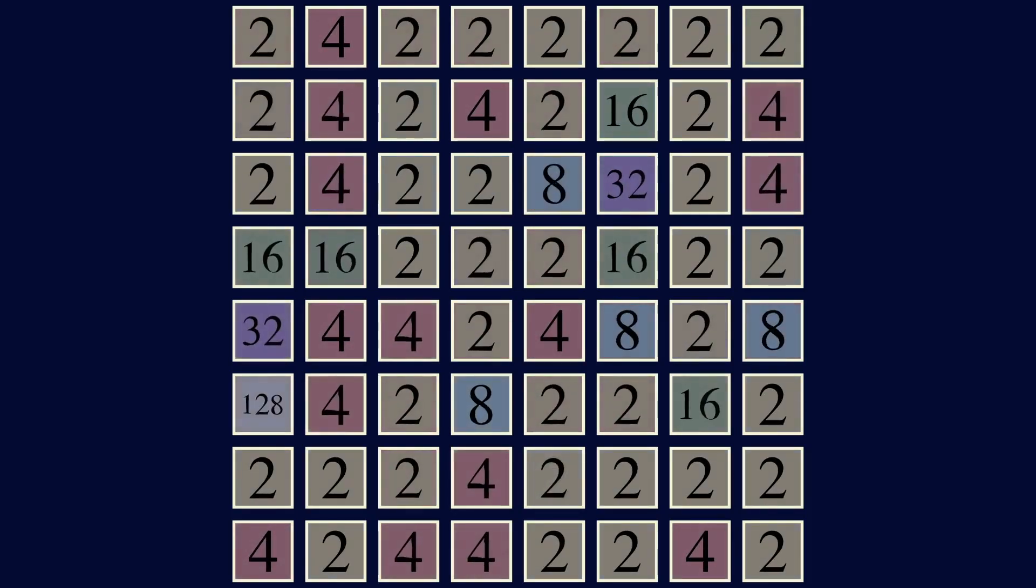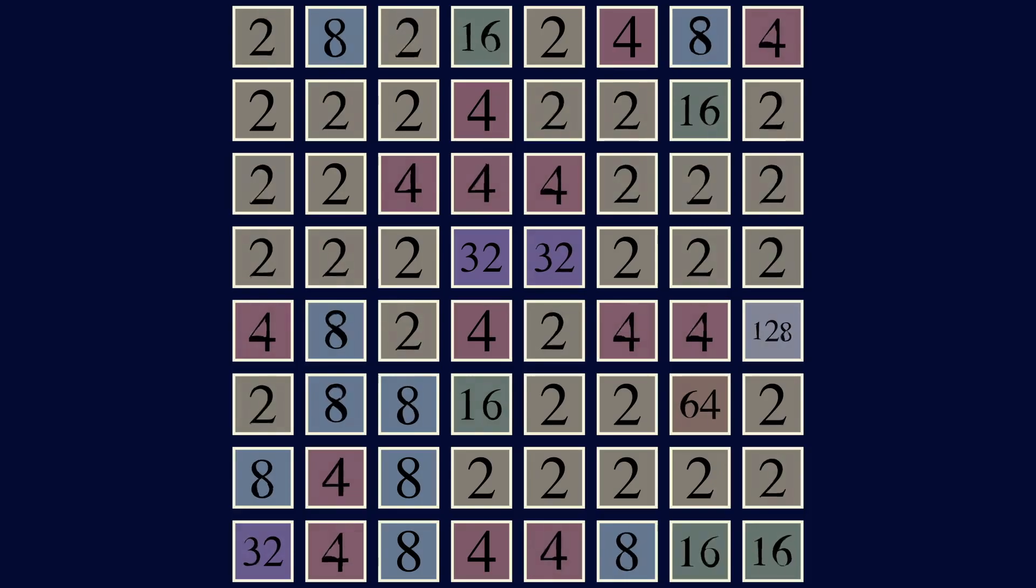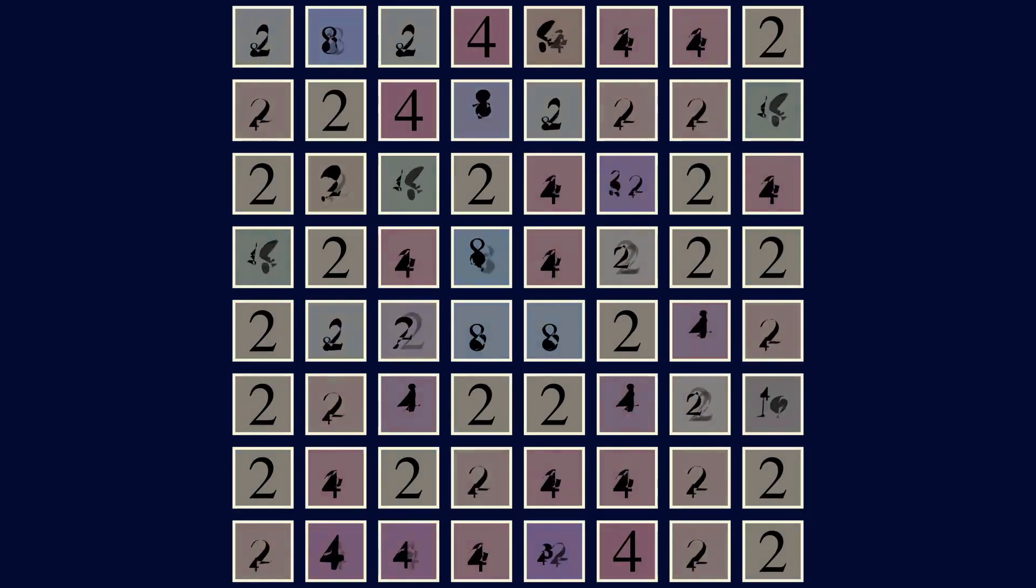To estimate this function, imagine we played a St. Petersburg game 64 times, so each of these squares represents a different game. Each time we play, the winnings are random, but on average, most of the winnings are low amounts like $2 or $4.